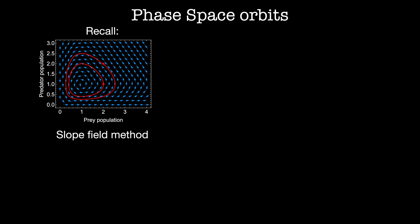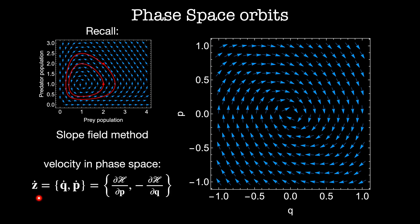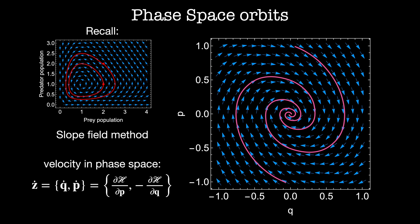The exact same thing happens when we look at Hamiltonian dynamics in phase space. Here's a plot of phase space, where q is on the x-axis and p is on the y-axis. This can be analyzed exactly the same way we did with the dynamical systems model. We treat the vector field as a velocity in phase space, where the components of the velocity are given by Hamilton's equations: z-dot equals dH/dp and minus dH/dq. Any point is an initial condition and the streamlines — the trajectories of the system — just flow along tangent to the blue vector field.